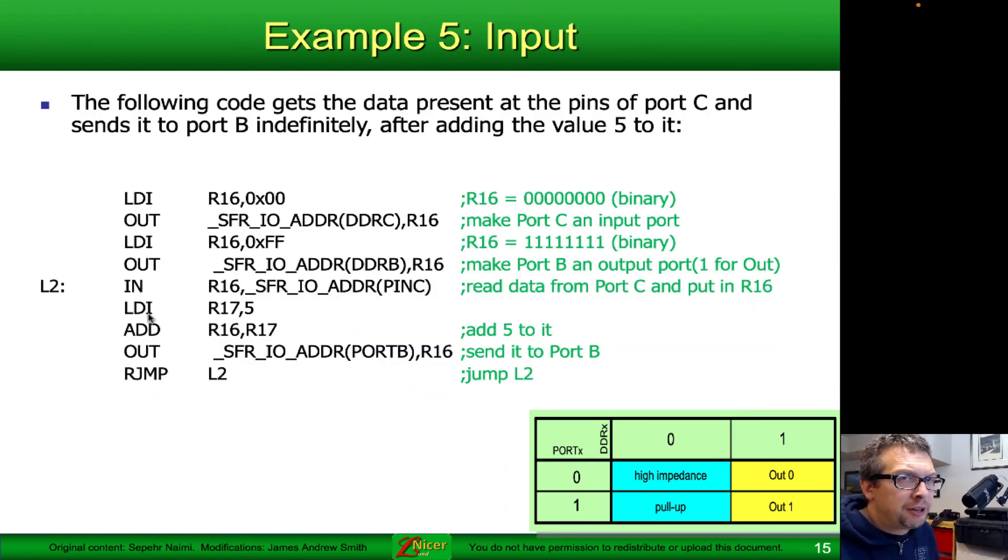Here's the fifth example. What we're going to do is take input values, eight of them, on port C and transfer them in a slightly modified form into port B. This represents examples where we would have switches on port C and then transfer the values immediately into the lights connected to port B.